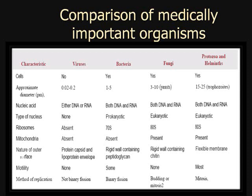For nucleic acid: viruses have either DNA or RNA, but bacteria, fungi, protozoa, and helminths all have both DNA and RNA. For type of nucleus: viruses have no nucleus, bacteria have a prokaryotic nucleus, and fungi, protozoa, and helminths all have a eukaryotic nucleus.